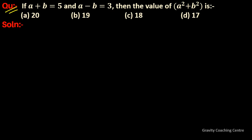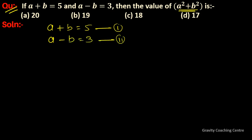The question: if a plus b equals 5 and a minus b equals 3, then find the value of a squared plus b squared. Given that a plus b equals 5 — call this equation one — and a minus b equals 3 — call this equation two. Now, adding them: